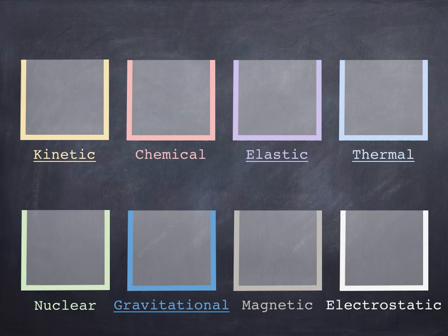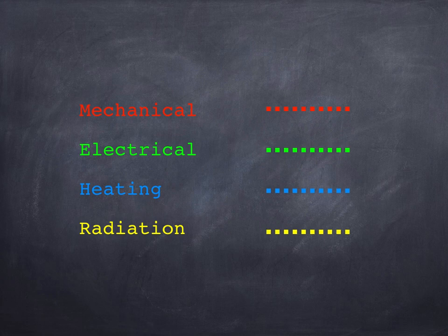Energy in a kinetic store is no different to energy in a chemical store, and we can move energy from one store to another. This happens via pathways, and there are four of these: mechanical through forces, electrical using electric currents, heating because of a temperature difference, and radiation using light or other electromagnetic waves.